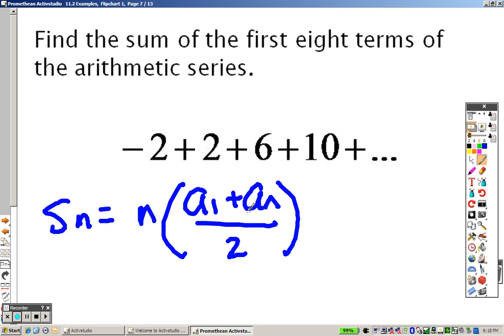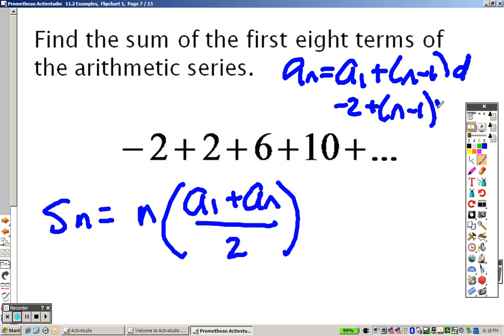Find the sum of the first eight terms, meaning I need to figure out what the eighth term is. So in order to do that, I need to first do this formula to find out what the eighth term is because I need to find the pattern. So that means this is a negative 2. It's going up by 4 every time.